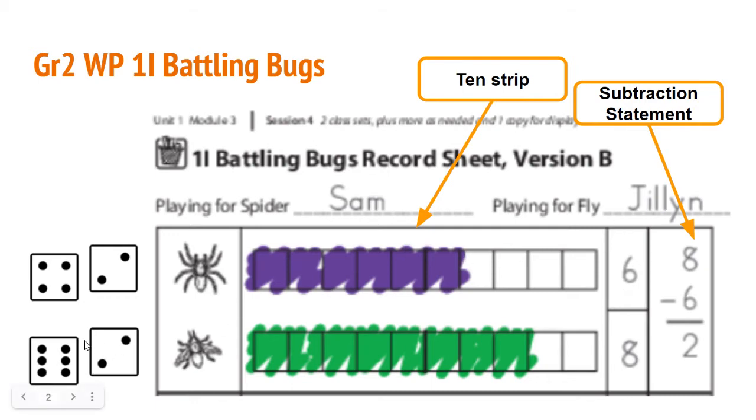Jillian rolls. She gets a 6 and a 2. Altogether that's 8. She colors that in on her 10 strip, writes her 8 here.